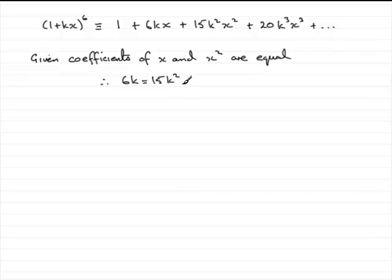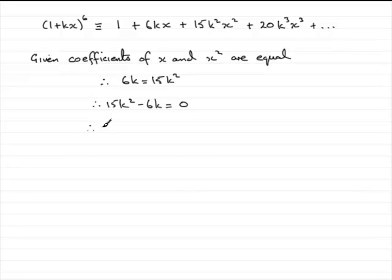So we've got a quadratic equation here, and if we subtract 6k from both sides, we've got 15k squared minus 6k equals 0. What I'd want to do next is to pull out a common factor here, which would be 3k. So we've got 3k bracket 5k minus 2, and that equals 0.